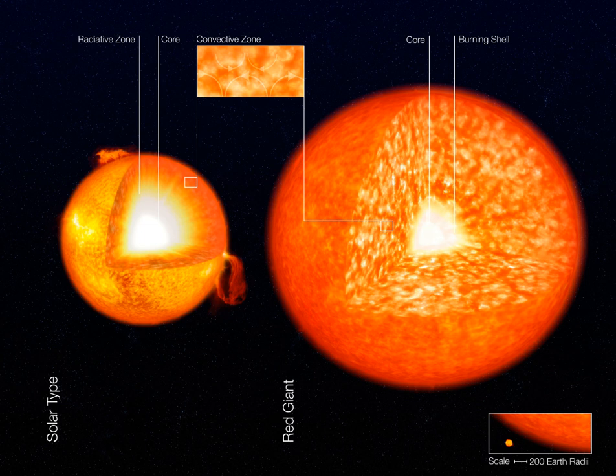A convection zone, convective zone, or convective region of a star is a layer which is unstable to convection. Energy is primarily or partially transported by convection in such a region. In a radiation zone, energy is transported by radiation and conduction.